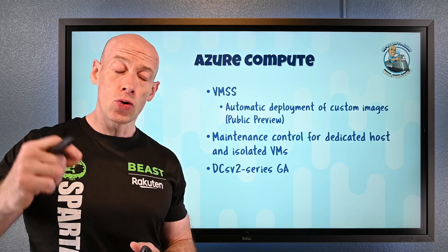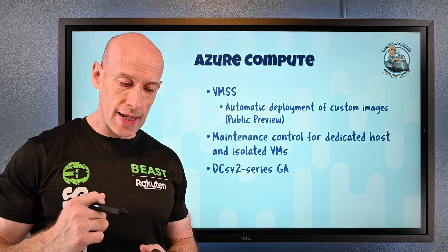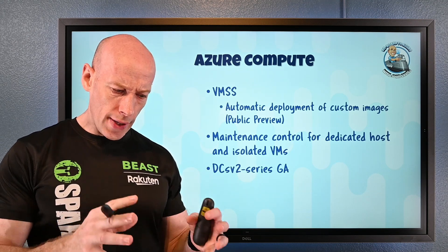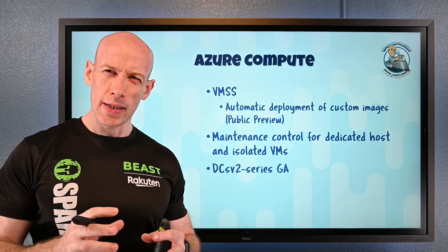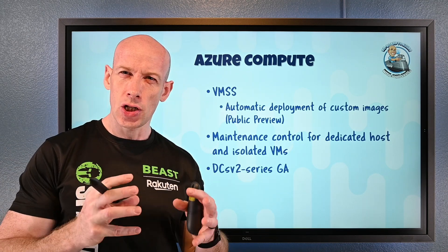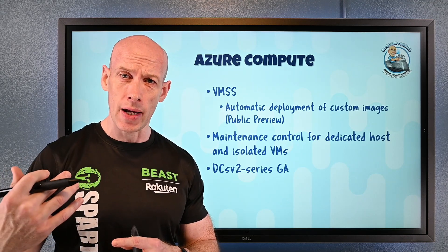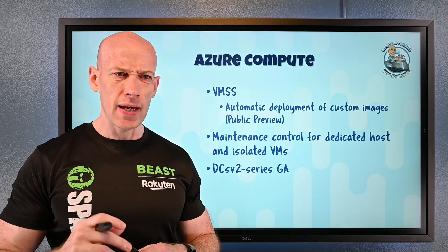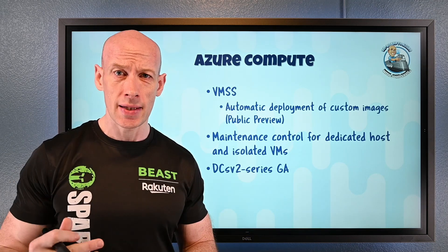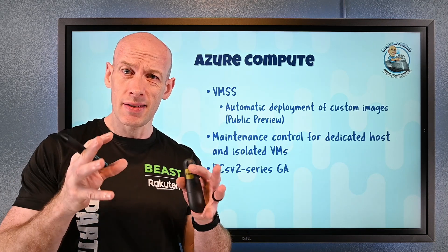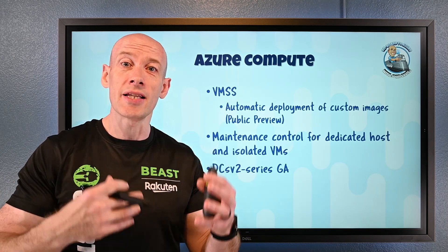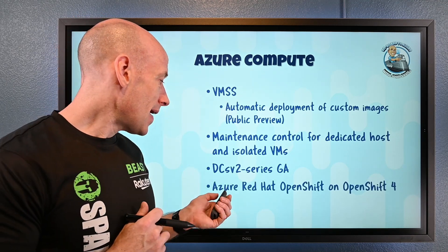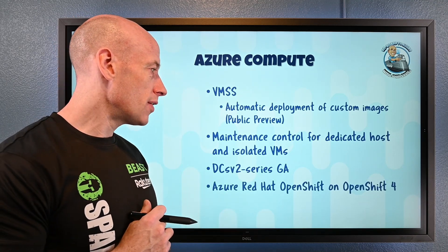The DCsv2 series is now generally available. This is part of confidential computing — Intel SGX enabled hardware that creates secure partitions of the processor and memory. So beyond encryption of data at rest and in transit, data is now also encrypted and protected while it's being computed.